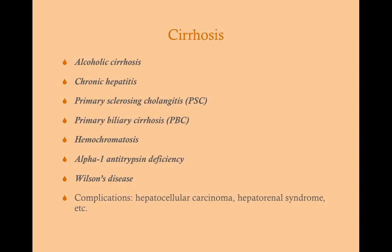These are the different causes of cirrhosis. Alcoholic cirrhosis is the most common — we won't discuss it at length, but all the cirrhotic symptoms including bleeding and portal hypertension will be present. Chronic hepatitis is an infectious cause. Primary sclerosing cholangitis, primary biliary cirrhosis, hemochromatosis, alpha-1 antitrypsin deficiency, and Wilson's disease are the others we'll discuss. Complications from any form of cirrhosis include hepatocellular carcinoma and hepatorenal syndrome, which is an idiopathic renal failure accompanying chronic liver disease.